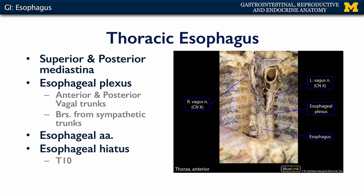The thoracic esophagus conducts boli of food down across the superior mediastinum and then the posterior mediastinum. It is nestled between the thoracic part of the descending aorta, which we can see here, and the inferior vena cava, which has been removed in this particular dissection.